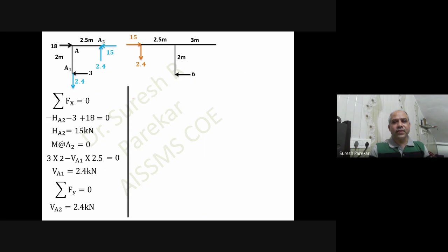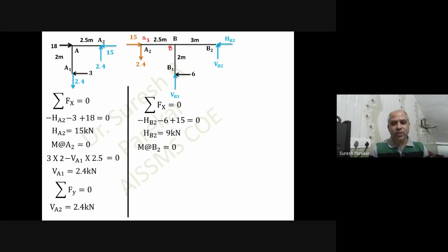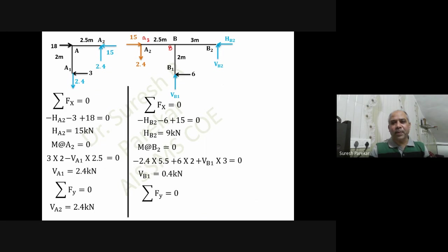For joint B, 2H1 equals 6. The values at A2 are shown in the opposite direction: 15 kilonewtons to the right and 2.4 kilonewtons downward. Three unknowns are VB1, VB2, and HB2. Summation Fx gives HB2 equal to 9 kilonewtons. Moment about B2 gives VB1 equal to 0.4 kilonewtons (positive, so upward). Summation Fy gives VB2 equal to 2 kilonewtons.